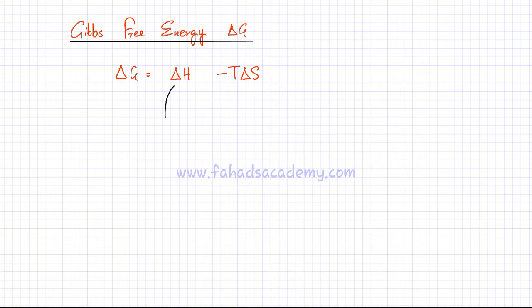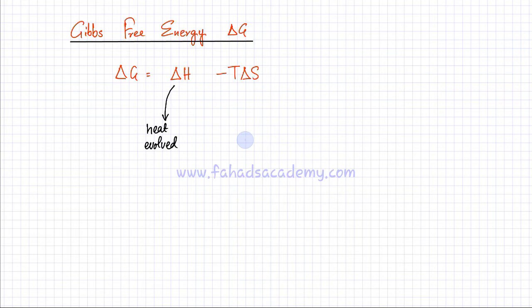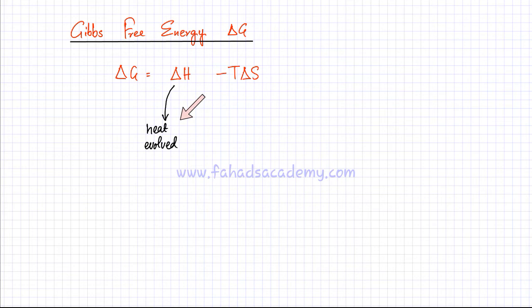Enthalpy is the amount of heat that is evolved in a reaction — we're talking about chemical equations. It could be a net output or a net input of heat energy due to bond fission and bond formation. Whenever a chemical reaction occurs, there are bonds being broken and bonds being formed, so heat would be evolved.